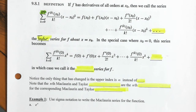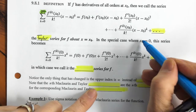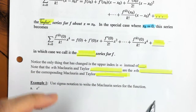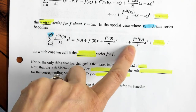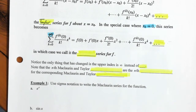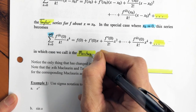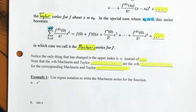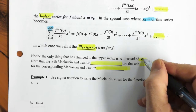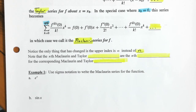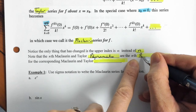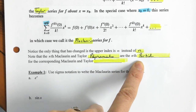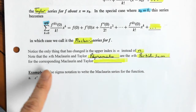These are called Taylor series, centered at some number not necessarily zero. The special case where x-sub-zero equals zero gives the Maclaurin series, summing from k equals zero to infinity. The only thing that has changed is the upper index is infinity instead of n. Note that the nth Maclaurin and Taylor polynomials are actually the nth partial sums of the corresponding Maclaurin and Taylor series.